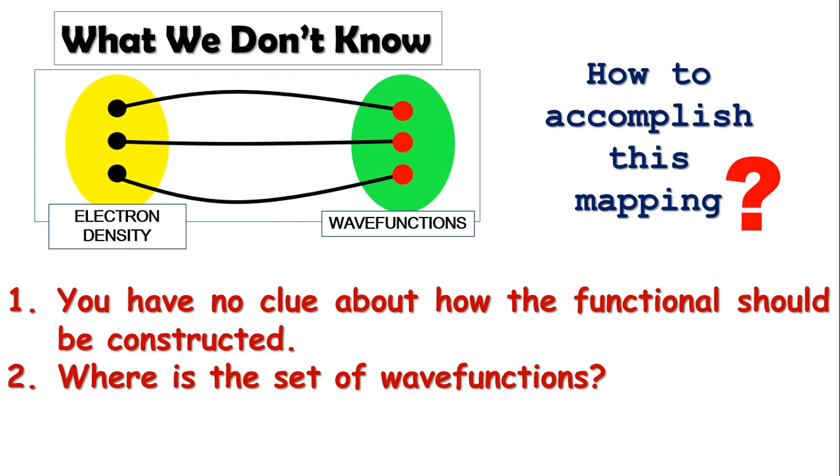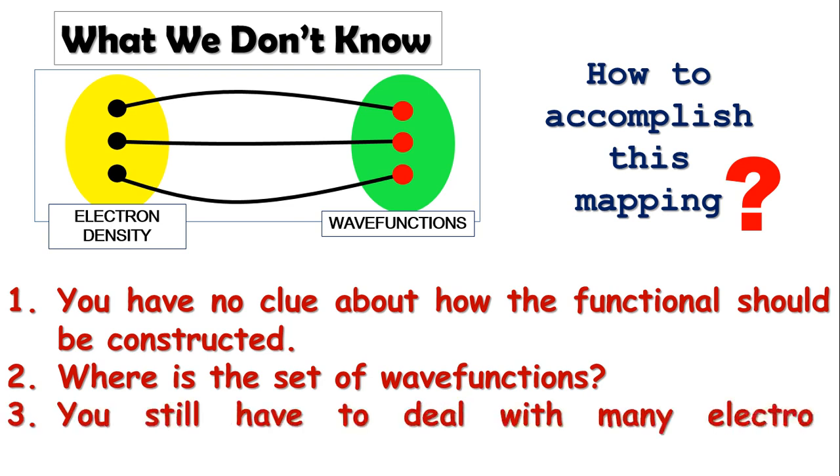And introducing electron density saved us from using 3N dimensions only, but still you have to deal with many-electron interactions. So practically, still we are at the same obscurity as before.